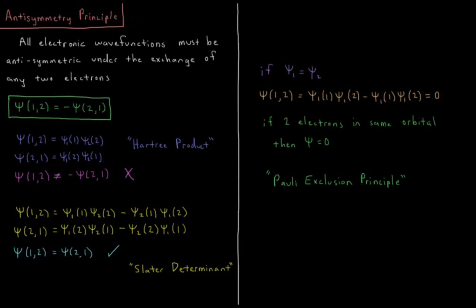This video will discuss the Antisymmetry Principle and the Pauli Exclusion Principle in quantum mechanics as applied to atoms. The Antisymmetry Principle says that all electronic wave functions must be antisymmetric under the exchange of any two electrons.